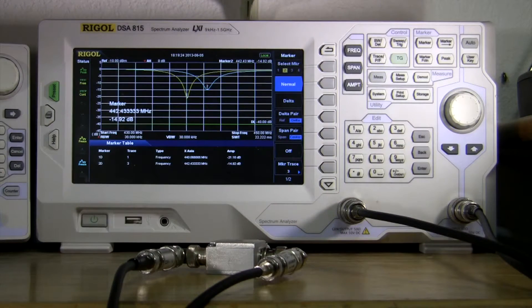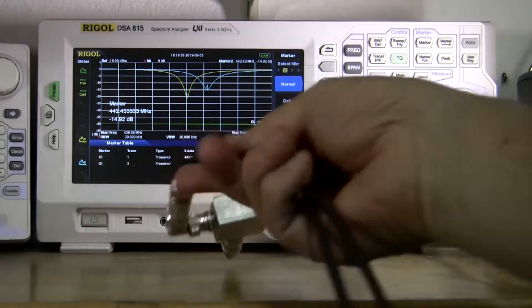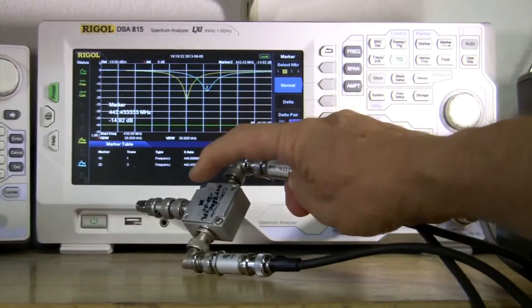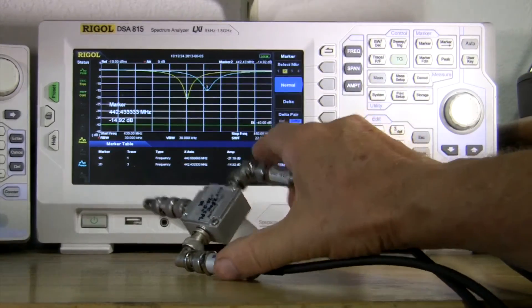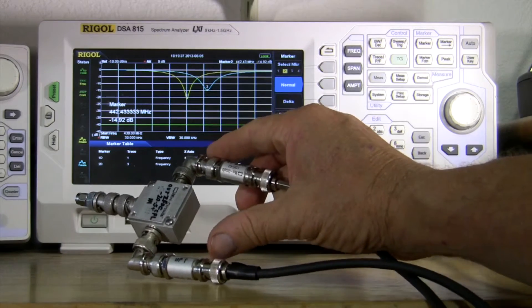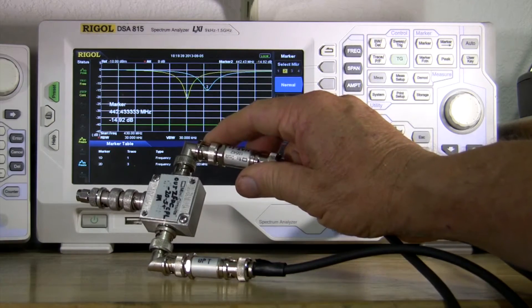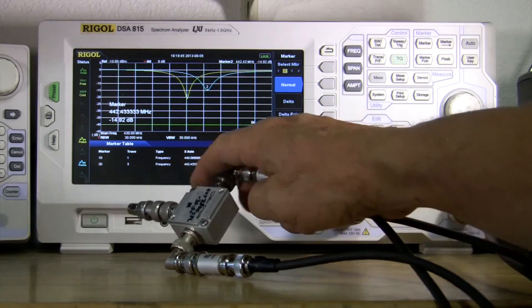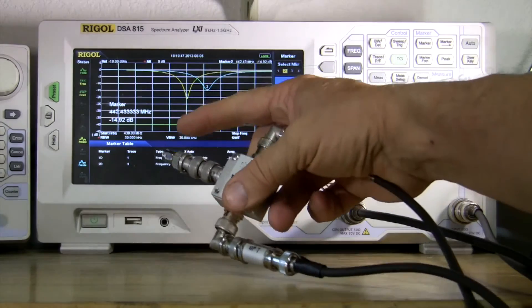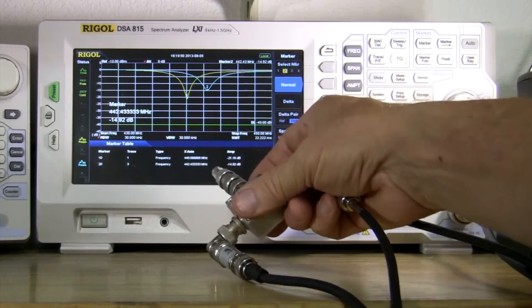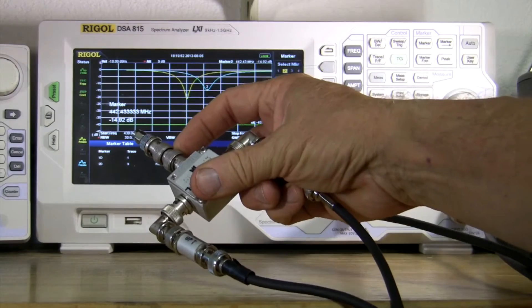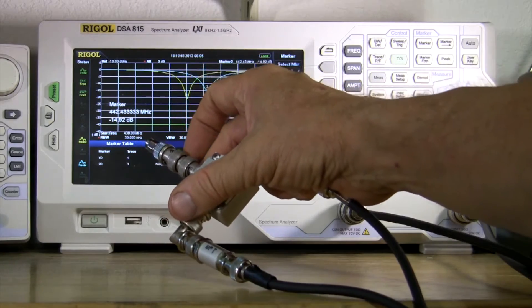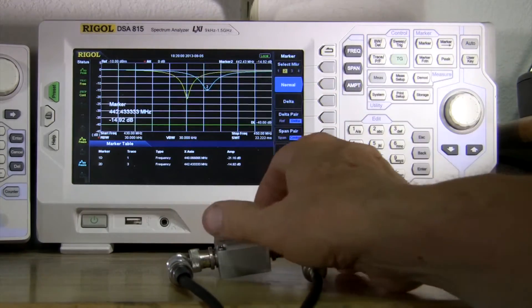Here are the curves that I just took using this. I've got a 1 dB pad on this side, 1 dB pad on this side, just to make sure I have 50 ohms on each port here, and the ZFDC-20-5 coupler from mini circuits. I have an SMA here and this has been set up to read properly with an open circuit here, 0 dB return loss.